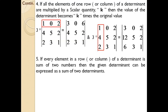Next property: if every element in a row or a column of a determinant is the sum of two numbers, then the given determinant can be expressed as a sum of two determinants. You may find it confusing — we will discuss with an example so you understand the concept.